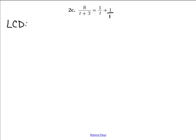So remember we need one of every part. So we need a T plus 3 part and then just a T part. The one we don't really need to include.